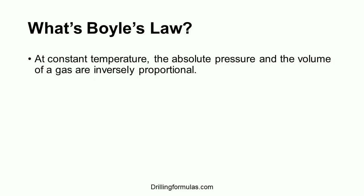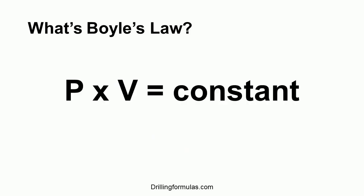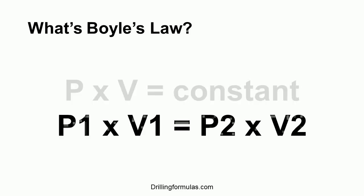What is Boyle's Law? At constant temperature, the absolute pressure and the volume of a gas are inversely proportional. This graph illustrates the pressure and volume relationship as per Boyle's Law. As per the definition, we can write the equation: pressure multiplied by volume is equal to a constant. We can simply say that P1 multiplied by V1 equals P2 multiplied by V2.